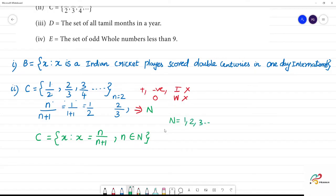Then x is equal to 1, 1 substitute, 1 by 1 plus 1 is 1 by 2. Then 2 by 3. Clear?